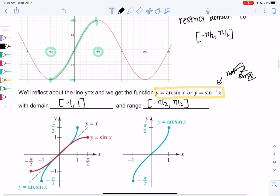And then we'll take the graph, so we'll take that green piece and we'll reflect it, and here is the graph of arcsine.